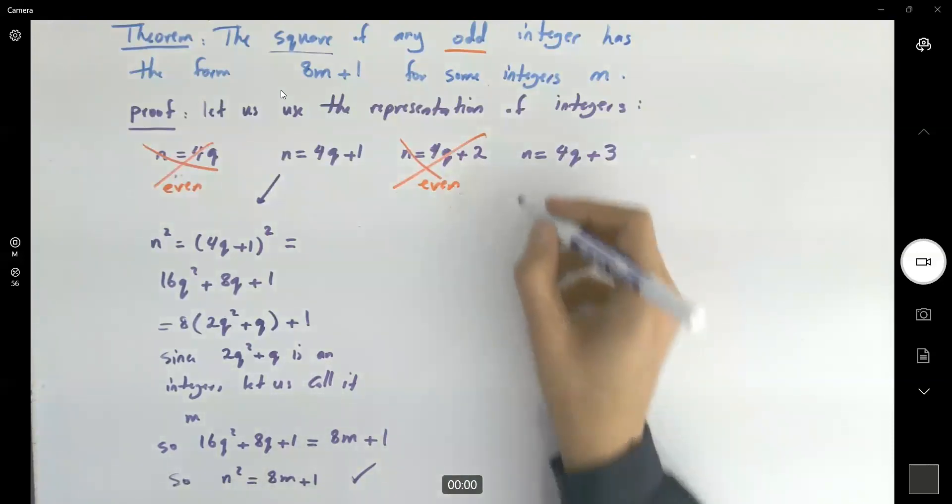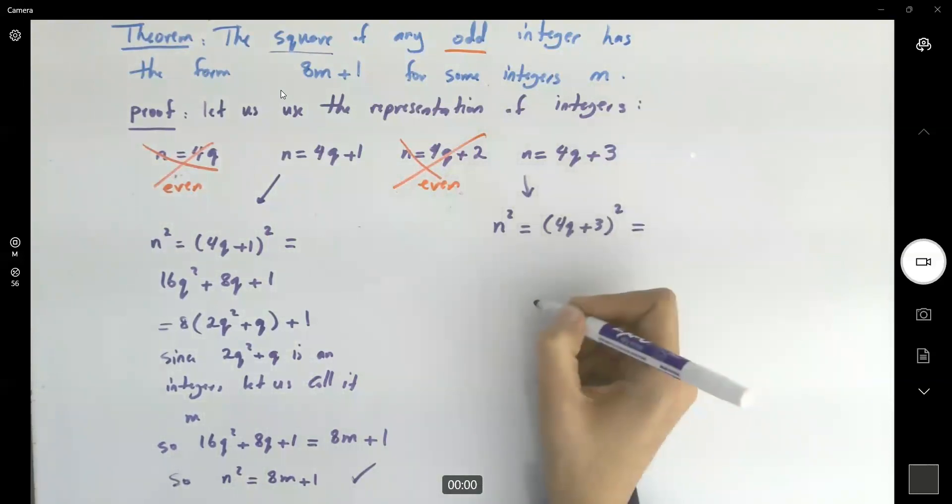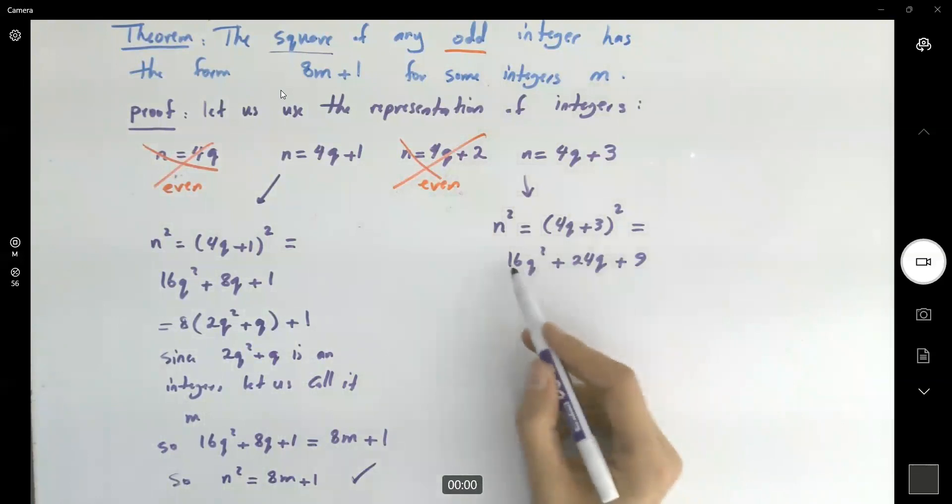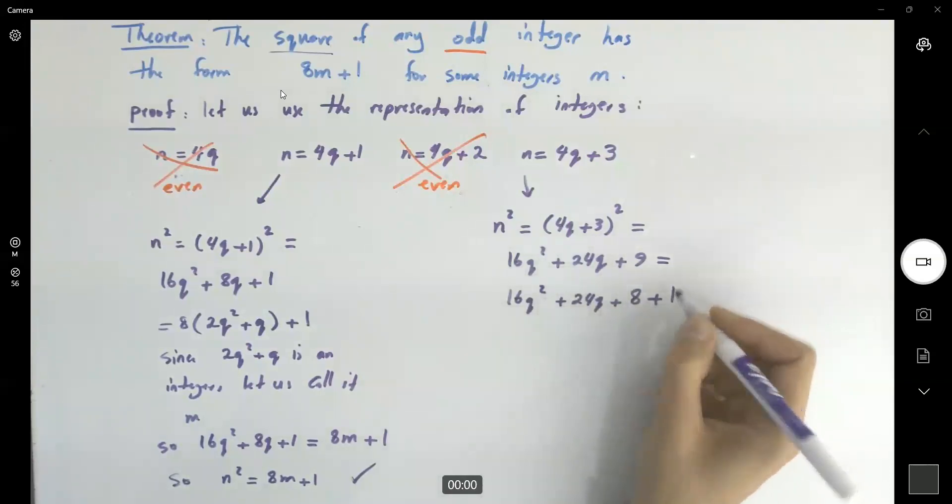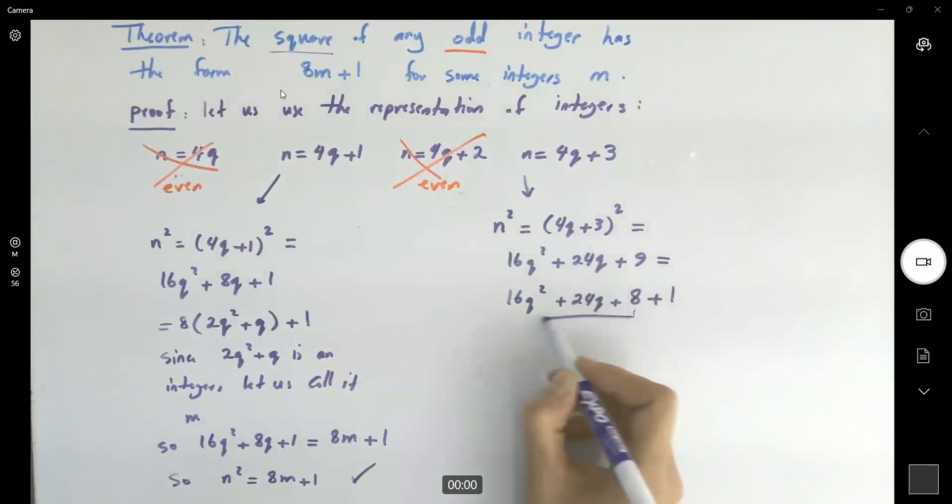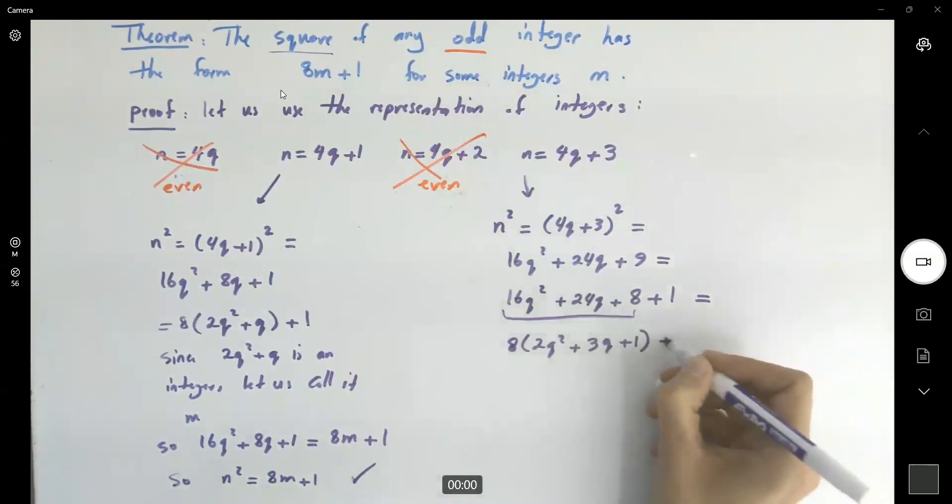What about this case? n squared is equal to 4q plus 3 to the second power. We get 16q squared plus 24q plus 9. This guy can be written as 16q squared plus 24q plus 8 plus 1. I broke down 9 into the sum of 8 and 1. So between these three, we can factor out 8. This is equal to 8 times 2q squared plus 3q plus 1 plus 1.